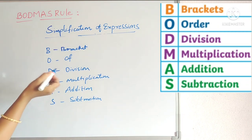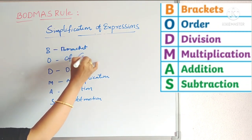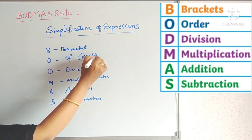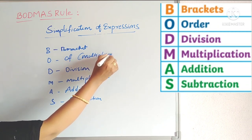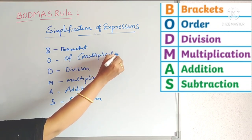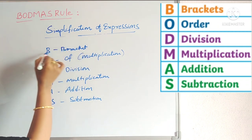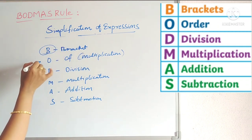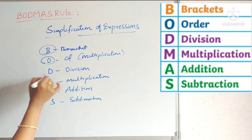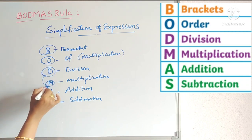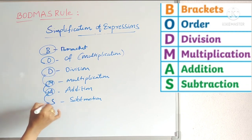This 'Of' also indicates multiplication only. So in our problem, when we simplify, first of all we have to simplify the bracket, and next Of, then Division, after that Multiplication, after that Addition, and then Subtraction.